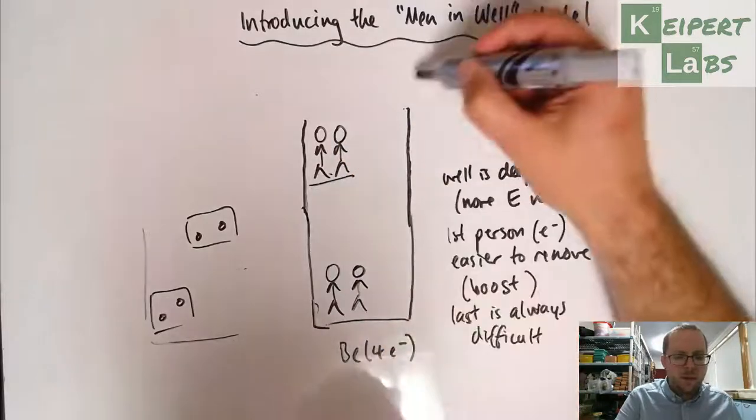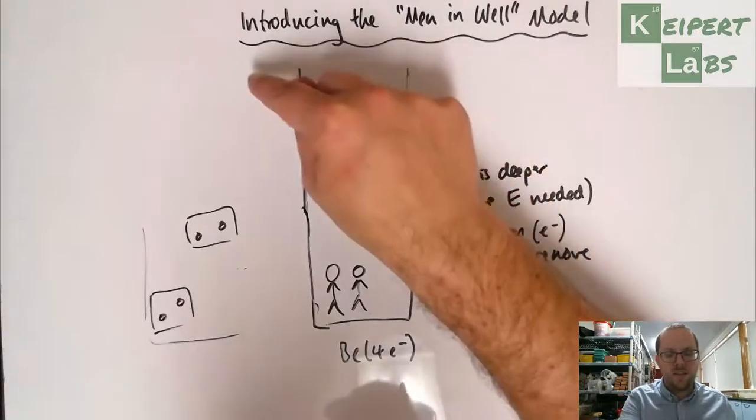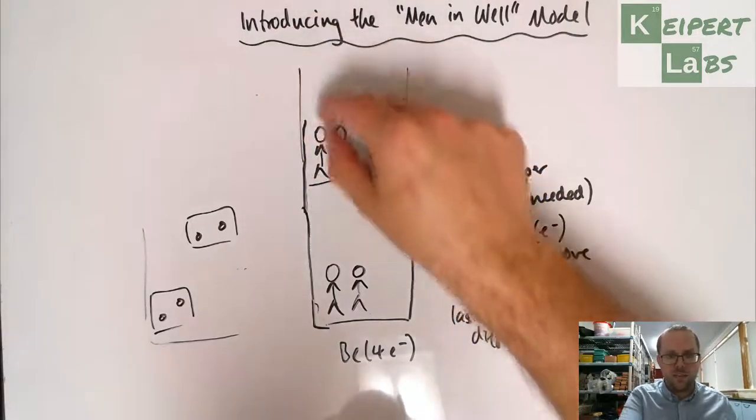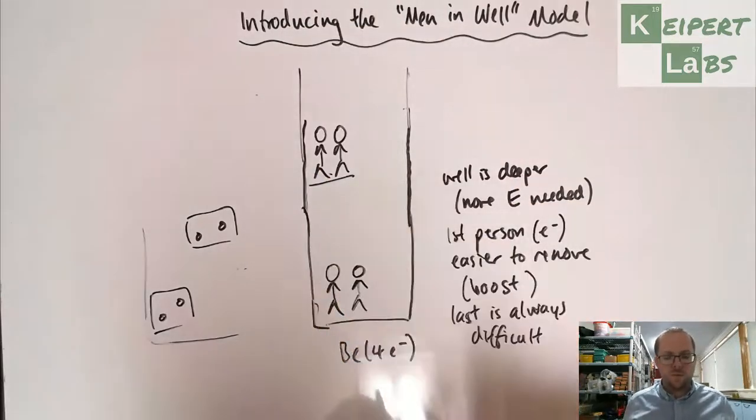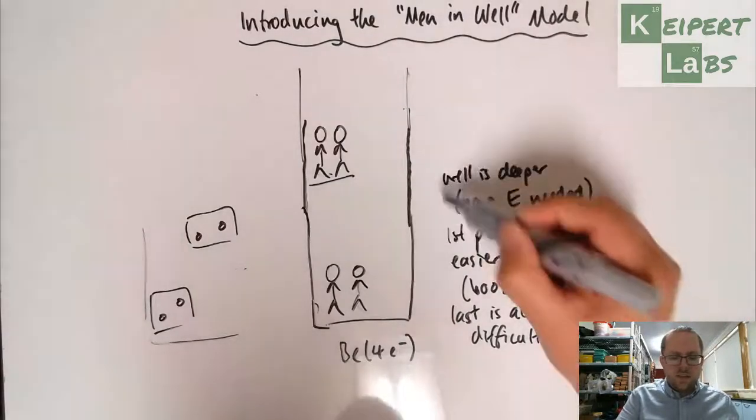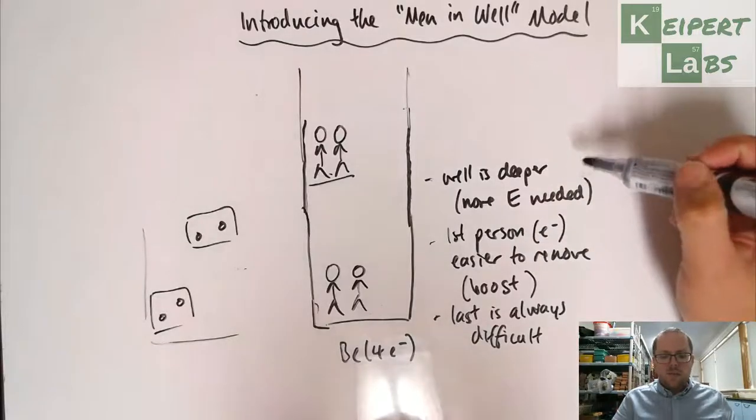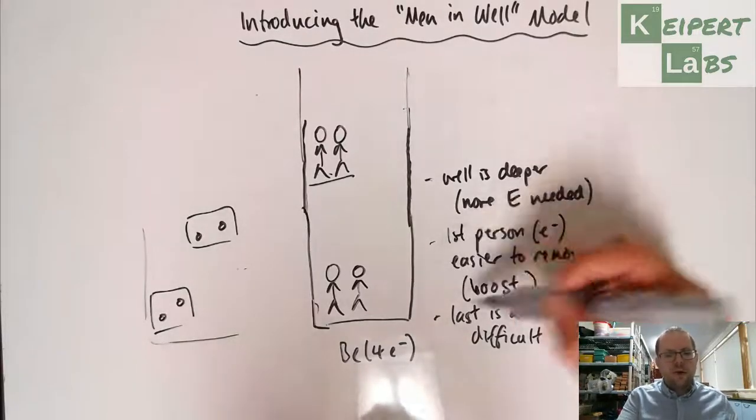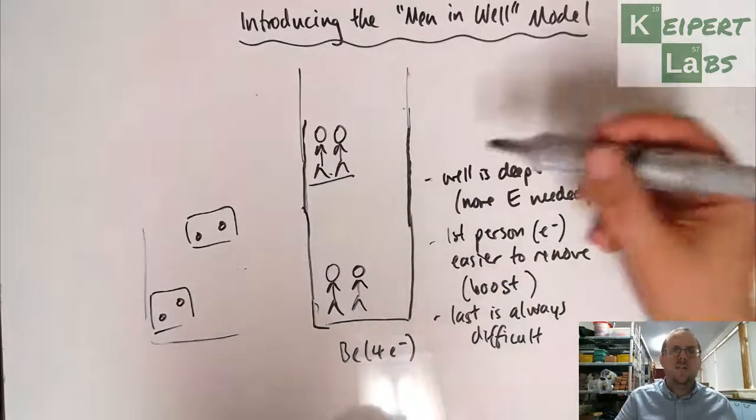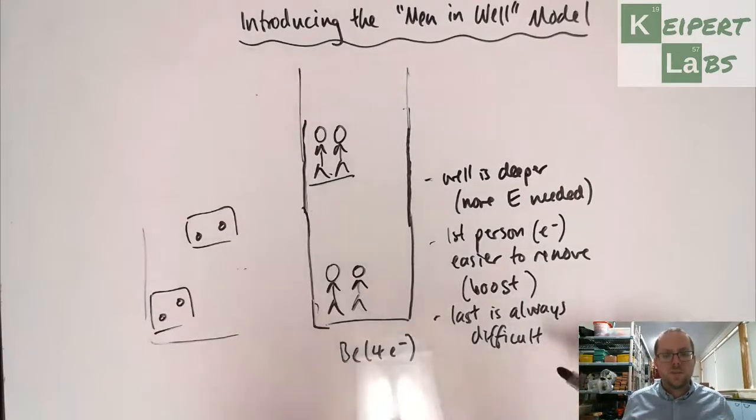Now our well is deeper again but this first one can boost the other guy to get out of that ledge and then he gets out of the ledge but he's by himself but he's not as far down as the guys at the bottom and then we have to remove the two at the bottom. In each of these cases we've seen that the well is deeper every time, that when we have more than one person together the first one is always easiest to get out than the subsequent ones. And the last one, the very last electron, is always the most difficult.